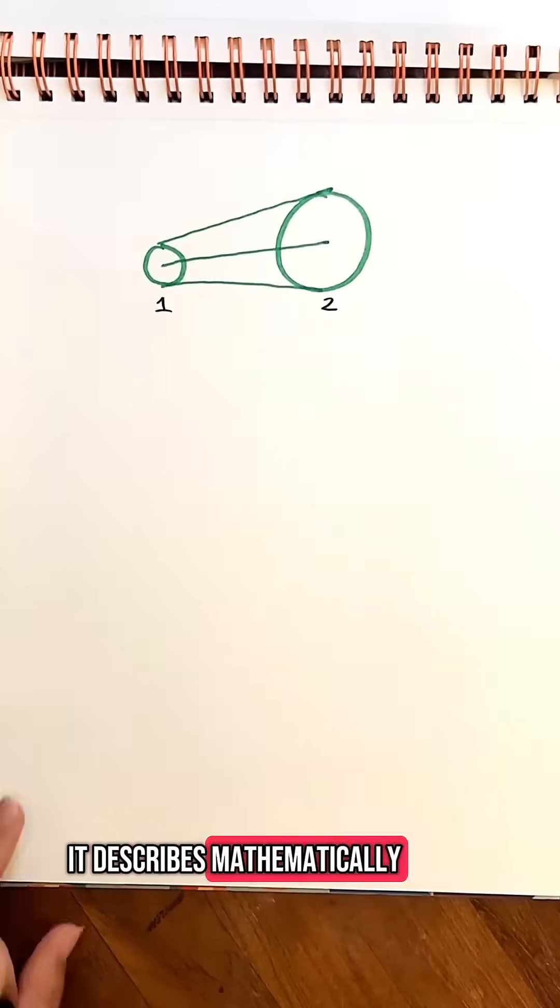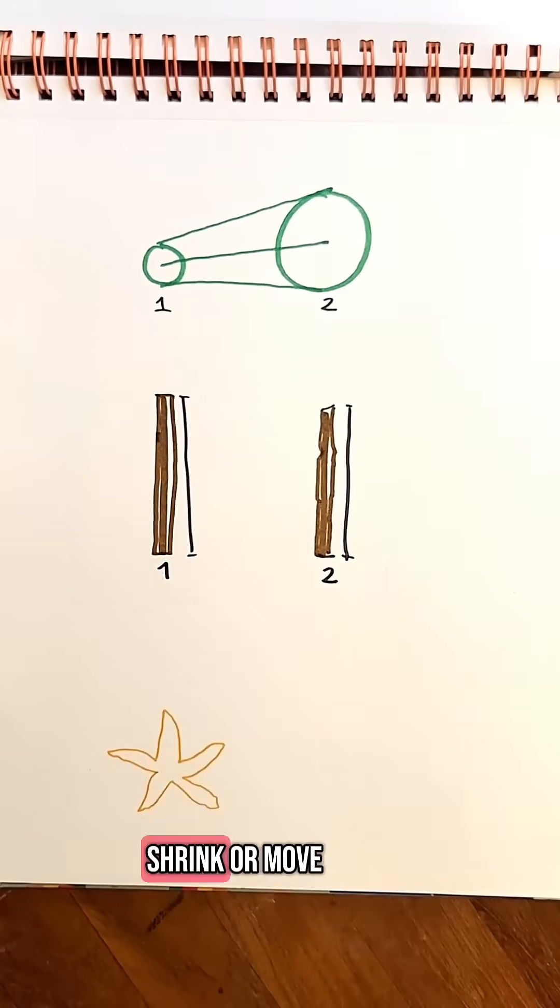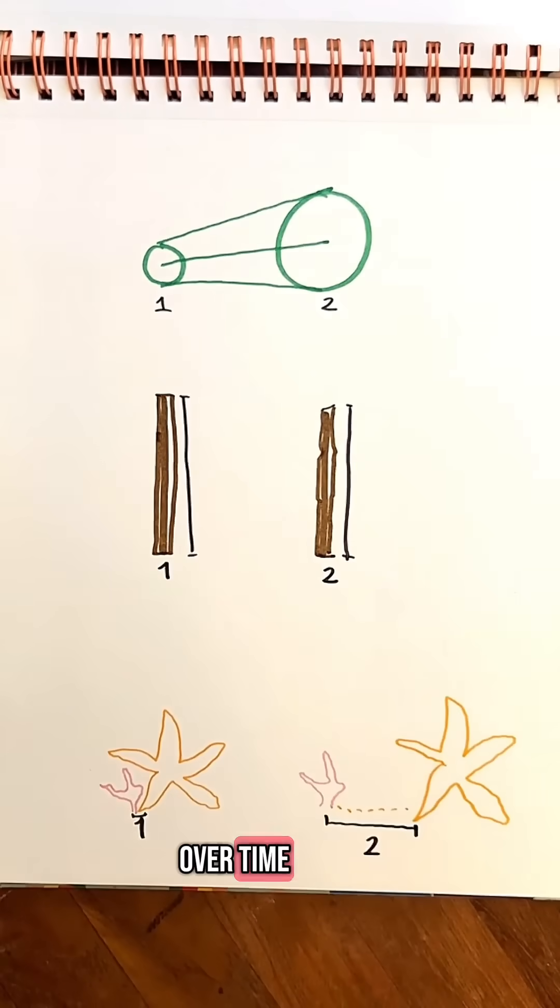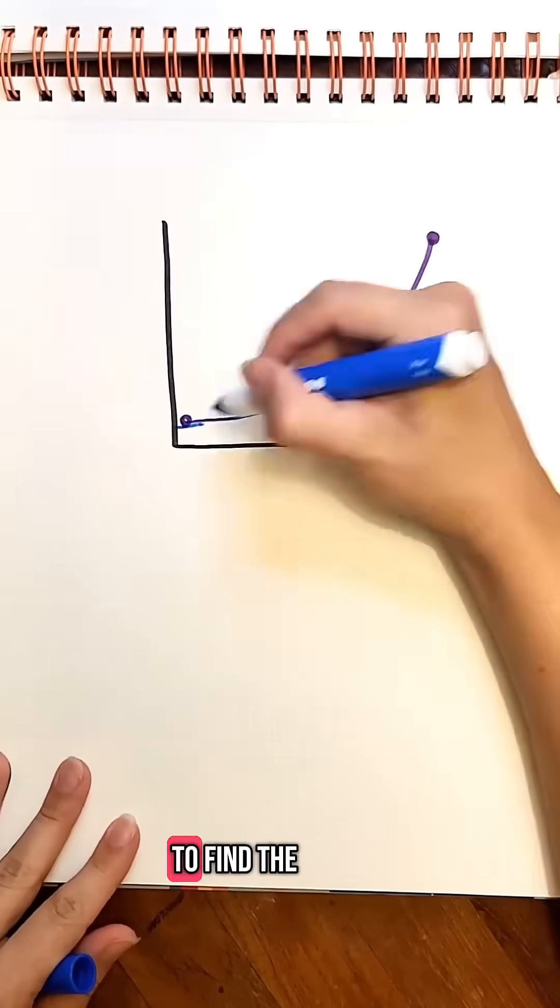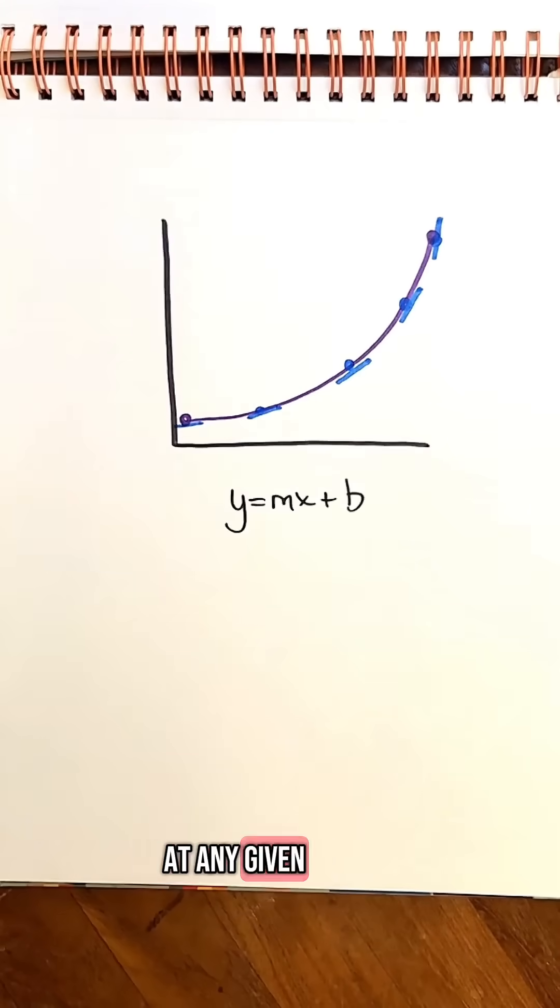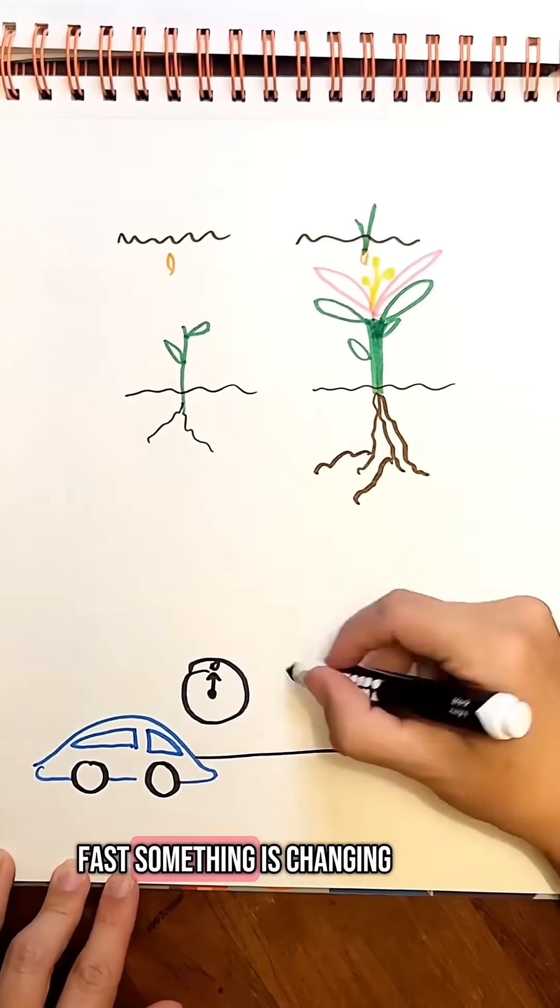It describes mathematically how things in the real world grow, shrink, or move over time. On paper, calculus is a tool to find the slope of a curve at any given point. That's how fast something is changing.